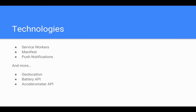The core technologies for Progressive Web Apps are service workers, the manifest.json, and push notifications — we'll take a look at some code examples. However, there is much more: geolocation APIs, battery APIs, accelerometer APIs, and much more. When using any of these APIs it is important to check cross-browser compatibility, as many are still in early stages and may not be supported on all browsers.